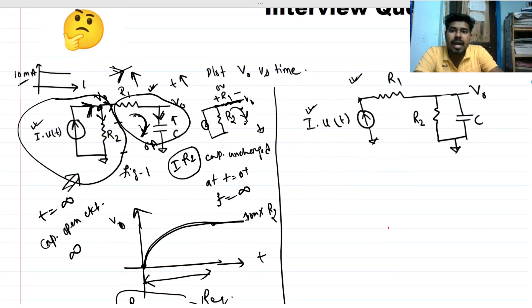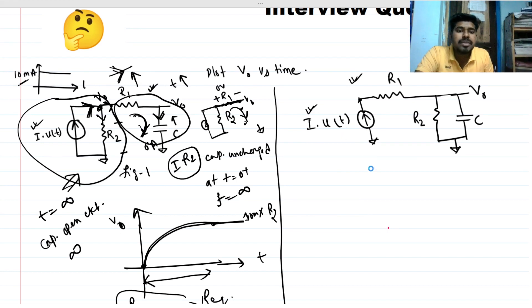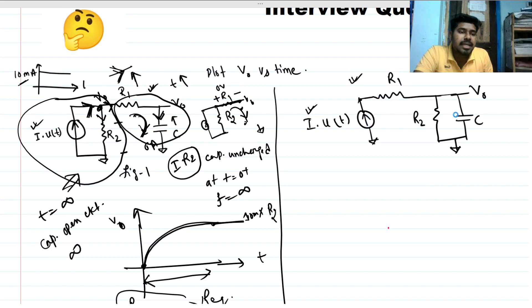Now let's move to the second circuit. We can see a similar case: a constant current is flowing through a resistance. But in the output, the load is a parallel combination of a resistor and a capacitor.